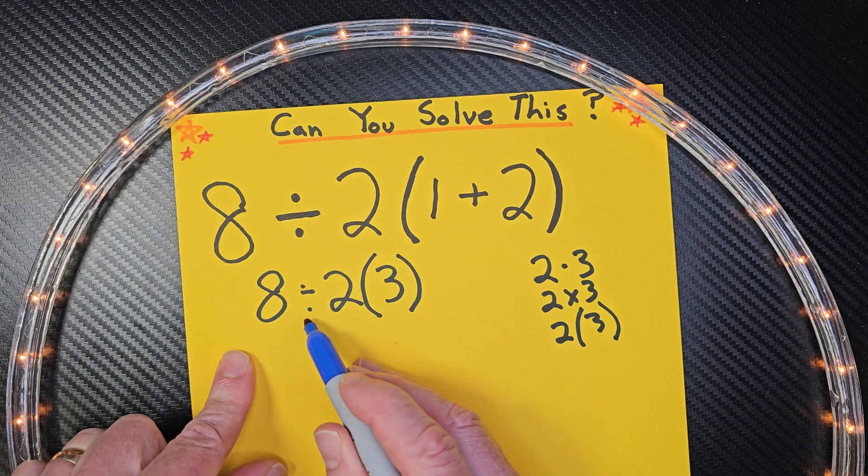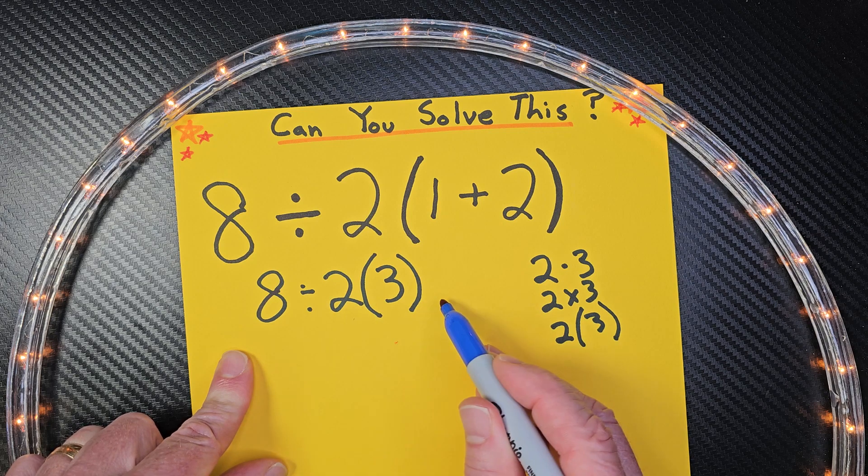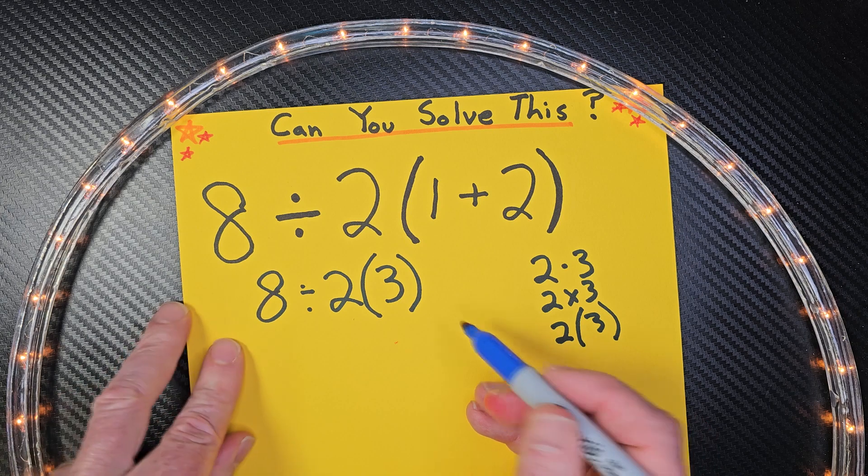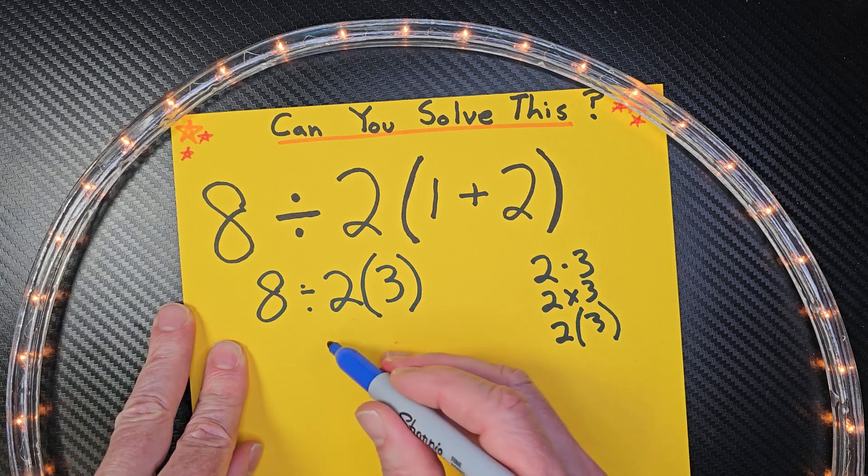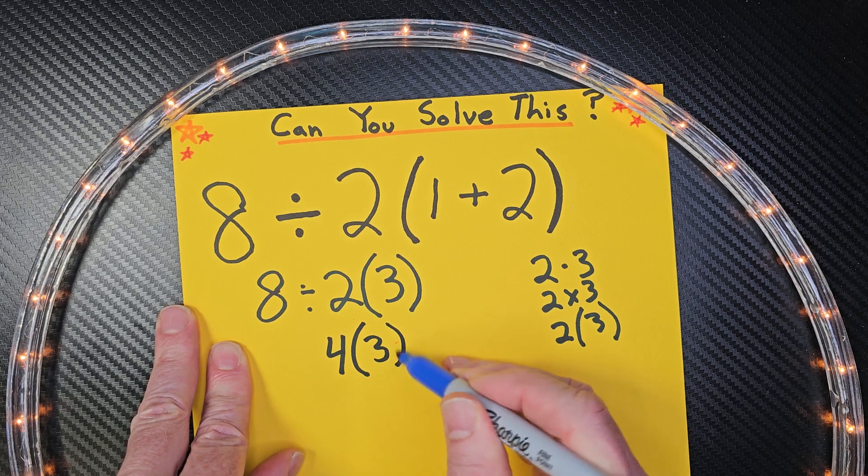So now I'm going to go ahead and do my division and my multiplication from left to right. Need to go that way, otherwise things get messed up. So 8 divided by 2 equals 4, 4 times 3, and then 4 times 3 would equal 12. There you go.